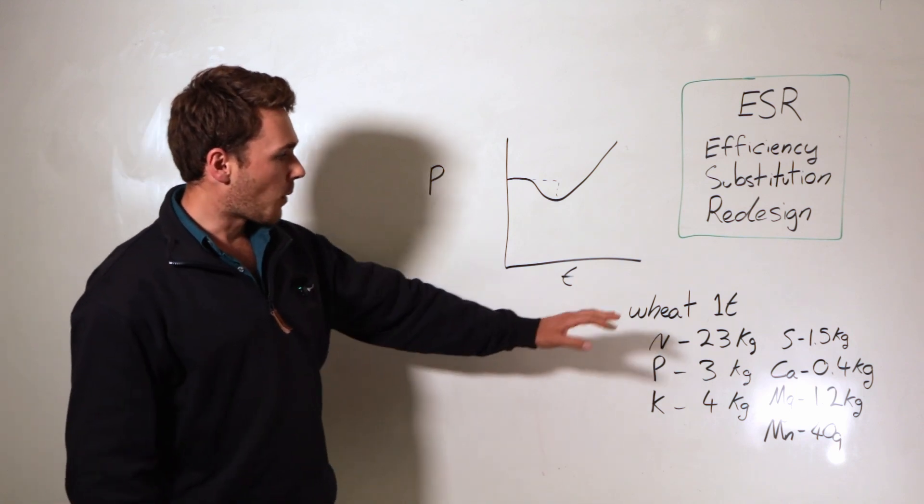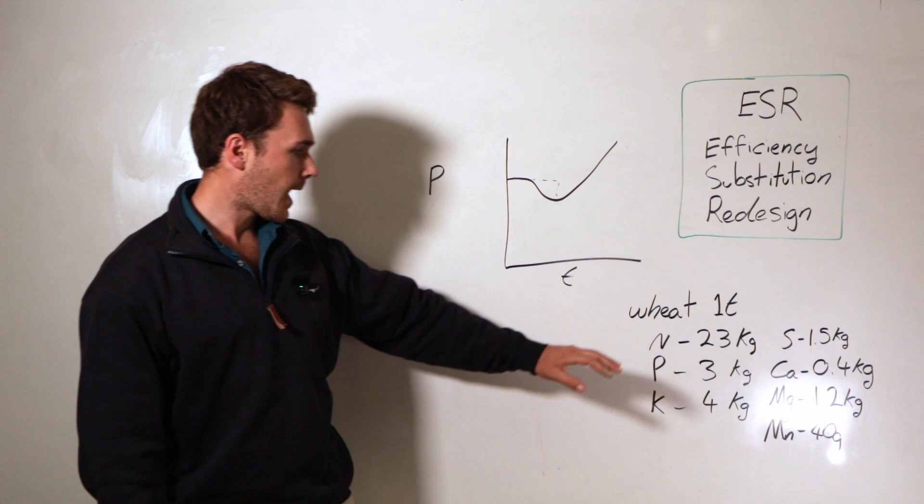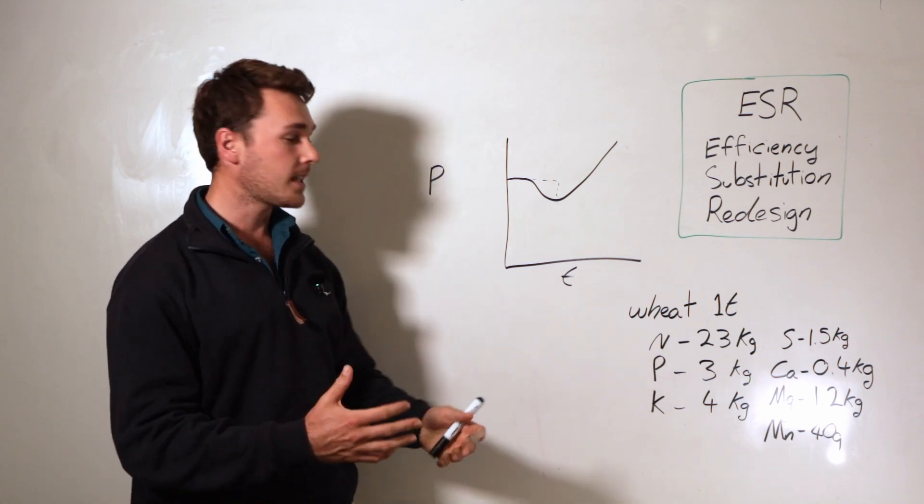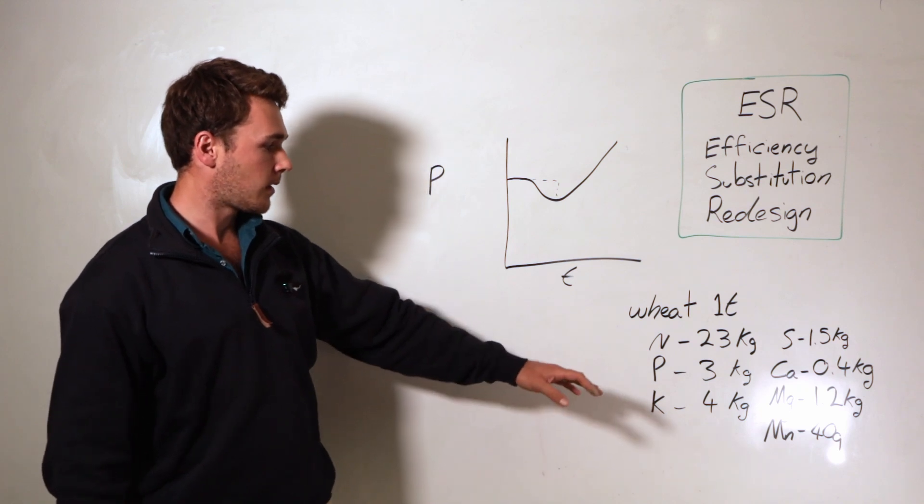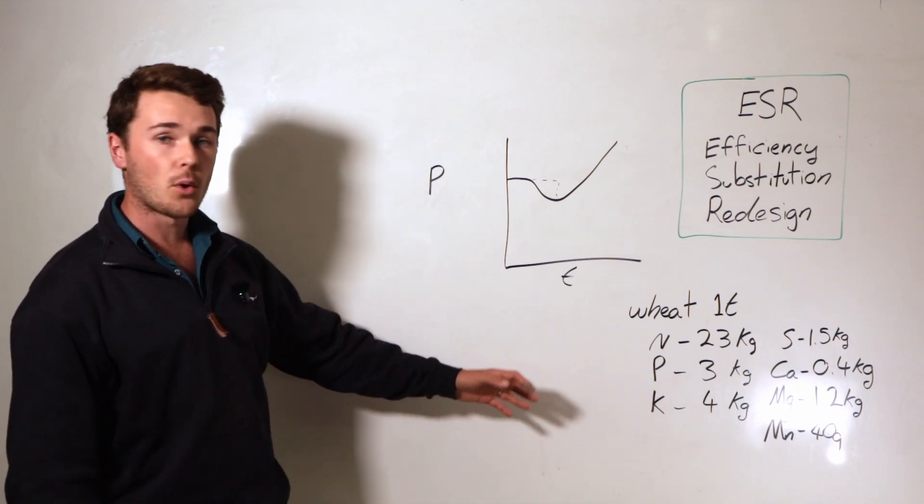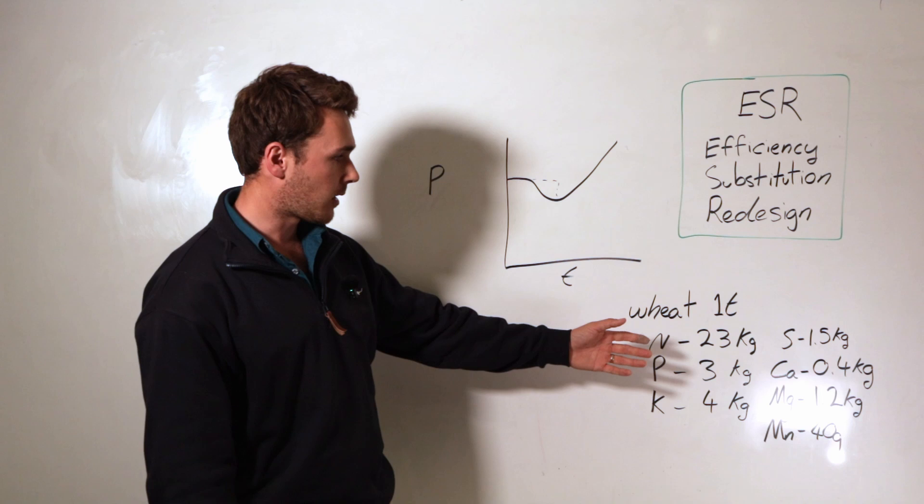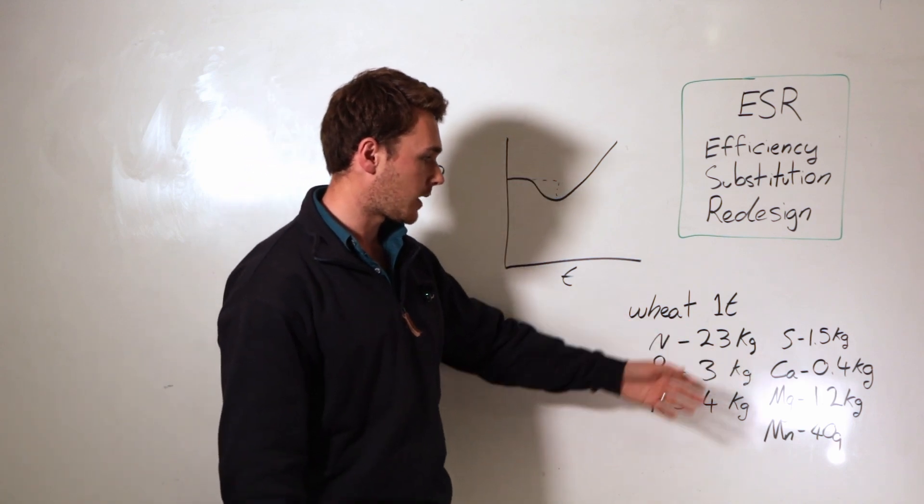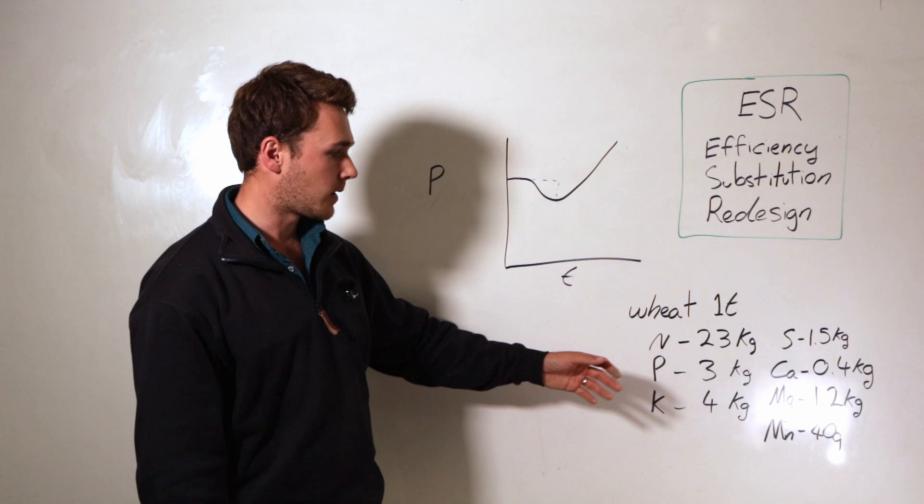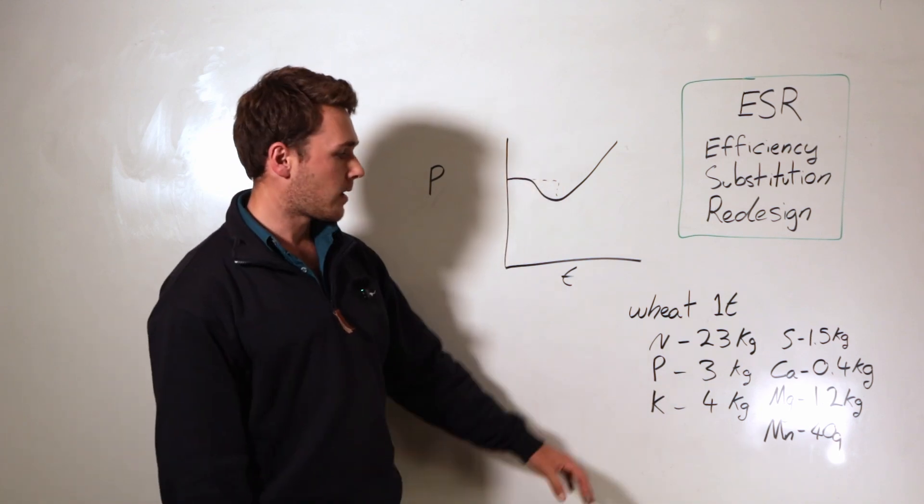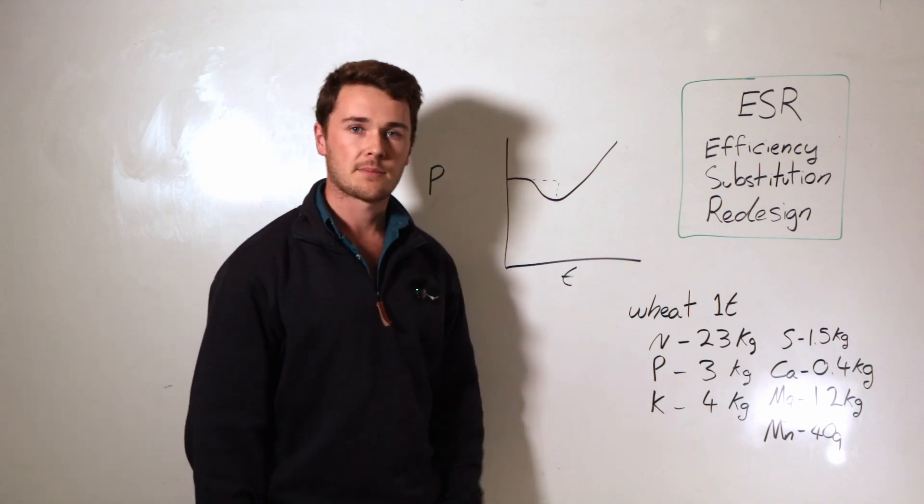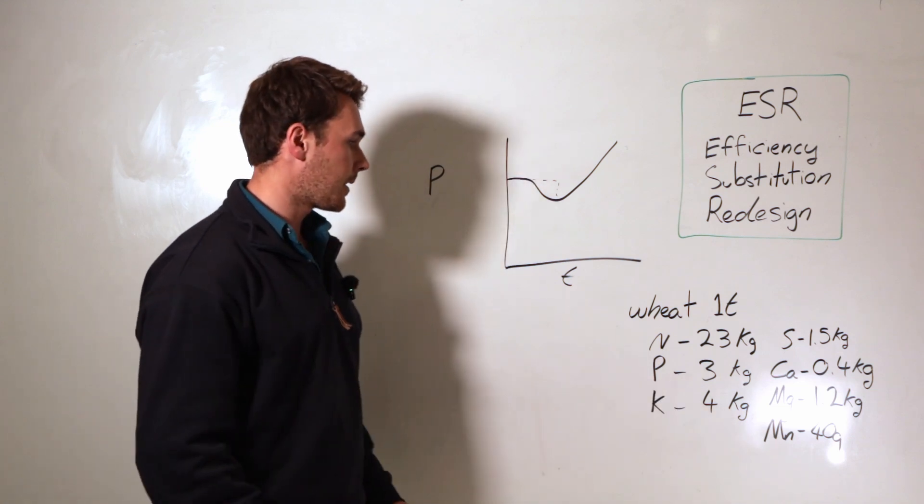It's important to remember that one ton of wheat has to export, physically in the actual grain we're exporting: 23 kilos of nitrogen, 3 kilos of phosphorus, 4 kilos of potassium, 1.5 kilos of sulfur, 0.4 kilos of calcium, 1.2 kilos of magnesium, 40 grams of manganese. Now there's a whole other range of minerals. I'm pointing out manganese specifically for a point I'll make later.